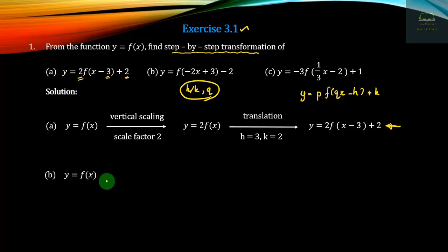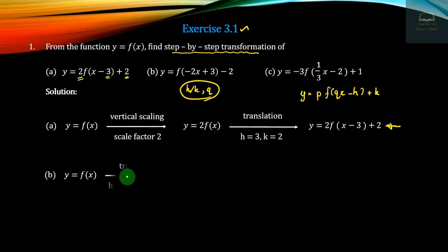So in translation, we are equal to plus 3, y is equal to 9. So in translation, h equals minus 3, k equals minus 2.